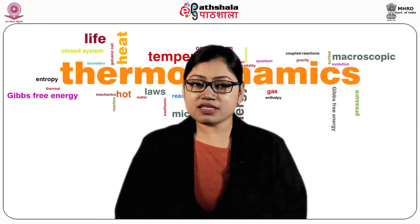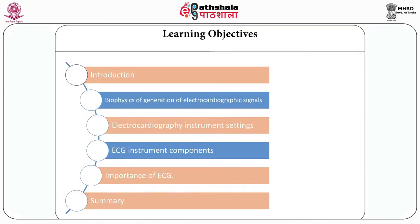In this module, we will start with the objectives, which include: introduction, biophysics of generation of electrocardiographic signals, normal cardiac cellular electrophysiology, source and sink concept, generation of cardiac electric fields, concept of limb leads, augmented limb leads, precordial leads and Wilson central terminal, concept of volume conductor, electrocardiographic instrument settings, recording setting, the recording system, electrocardiography electrode connections, importance of ECG, and finally the summary of the module.